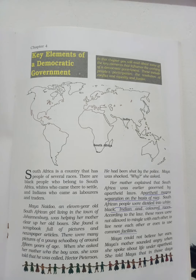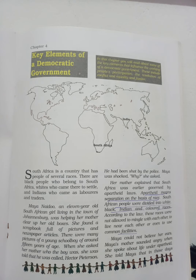In India, discrimination is based on caste — people are grouped into different castes like Brahmin, Kshatriya, Vaishya, and Shudra. In Africa, discrimination was based on color, which is known as apartheid. Apartheid means separation on the basis of race. South African people were divided into white, black, Indian, and colored races. According to this law, these races were not allowed to mingle with each other or even use common facilities.